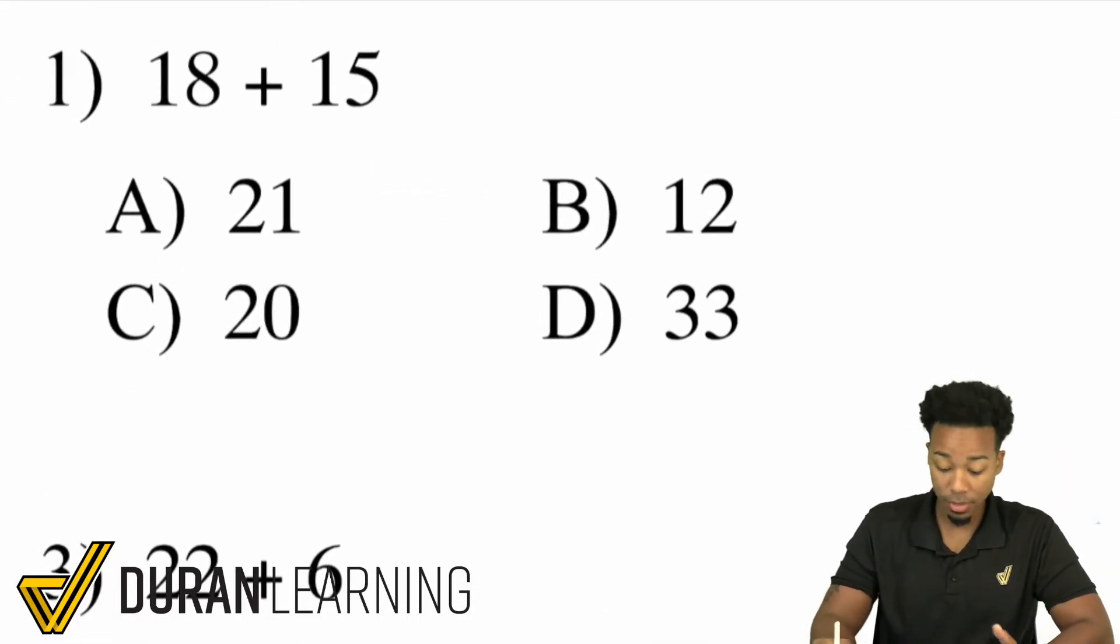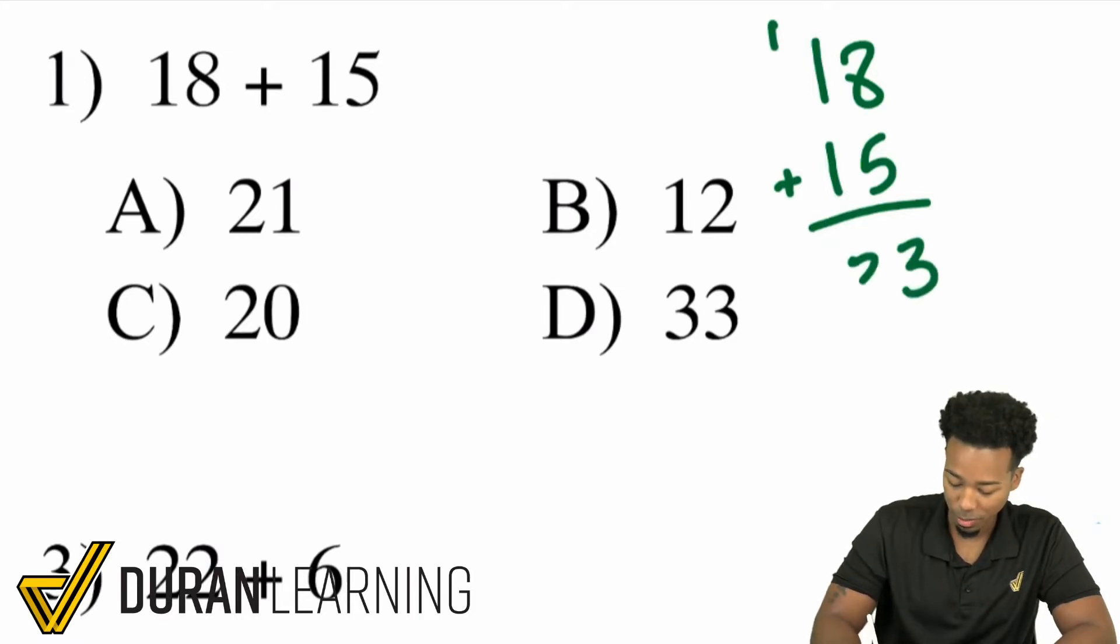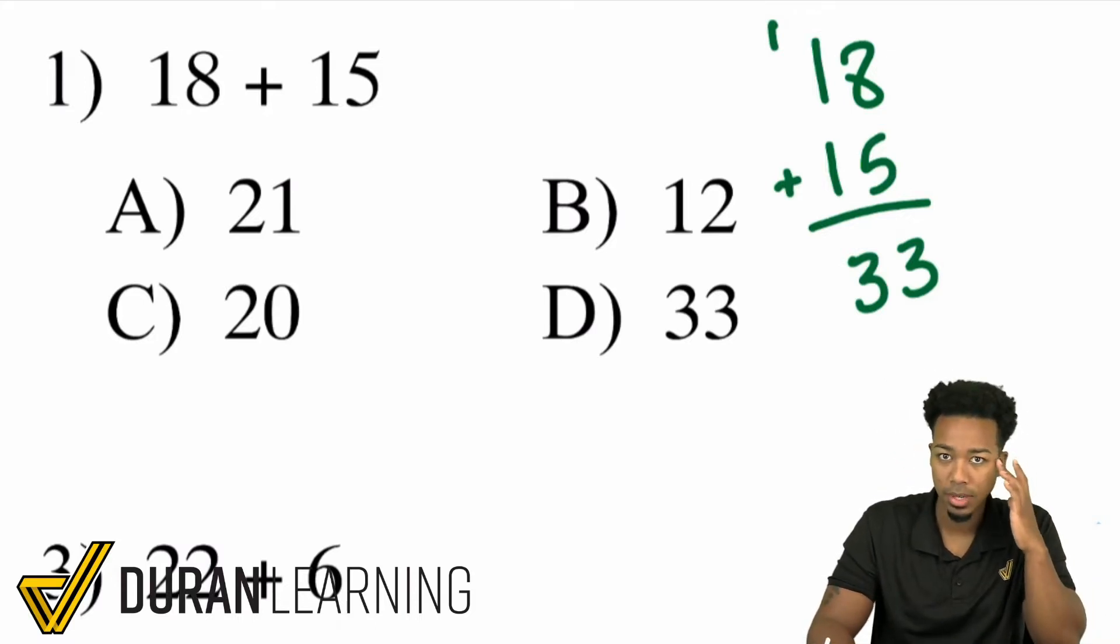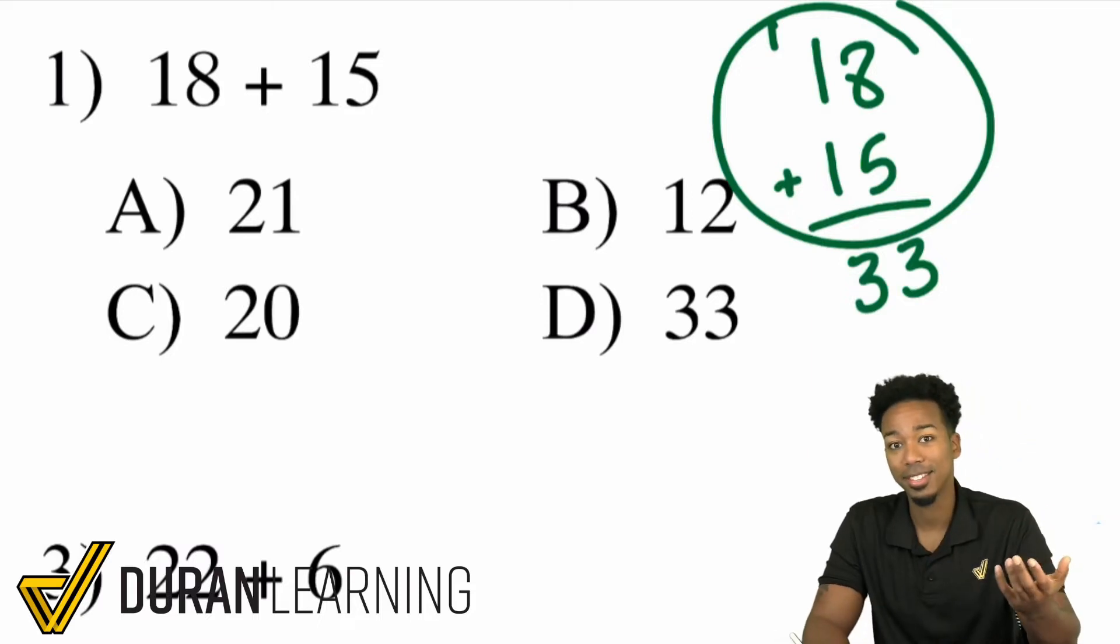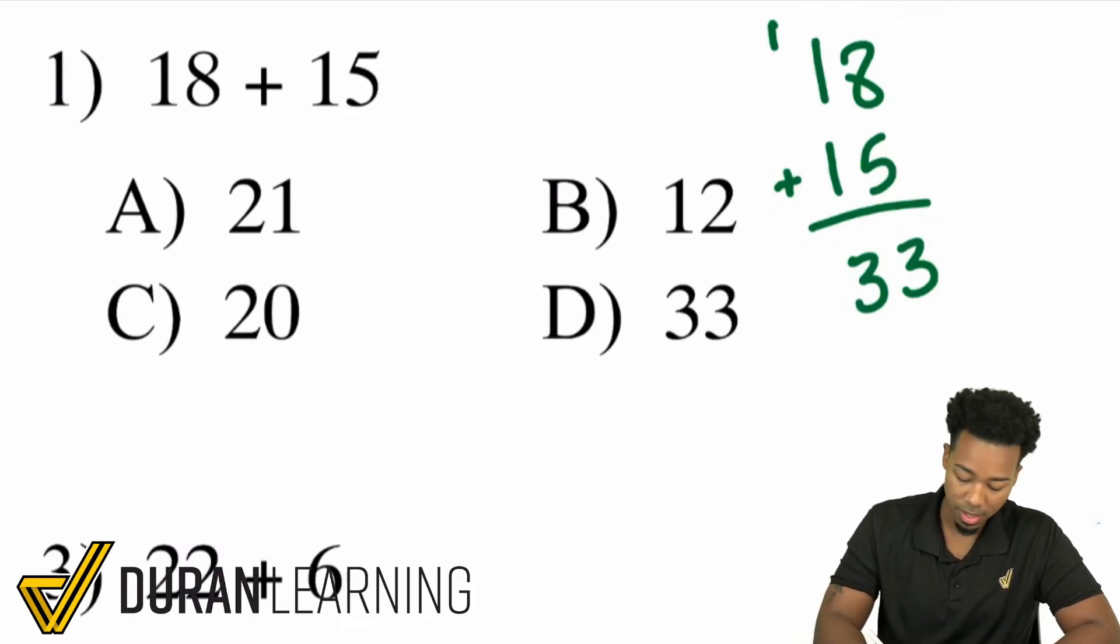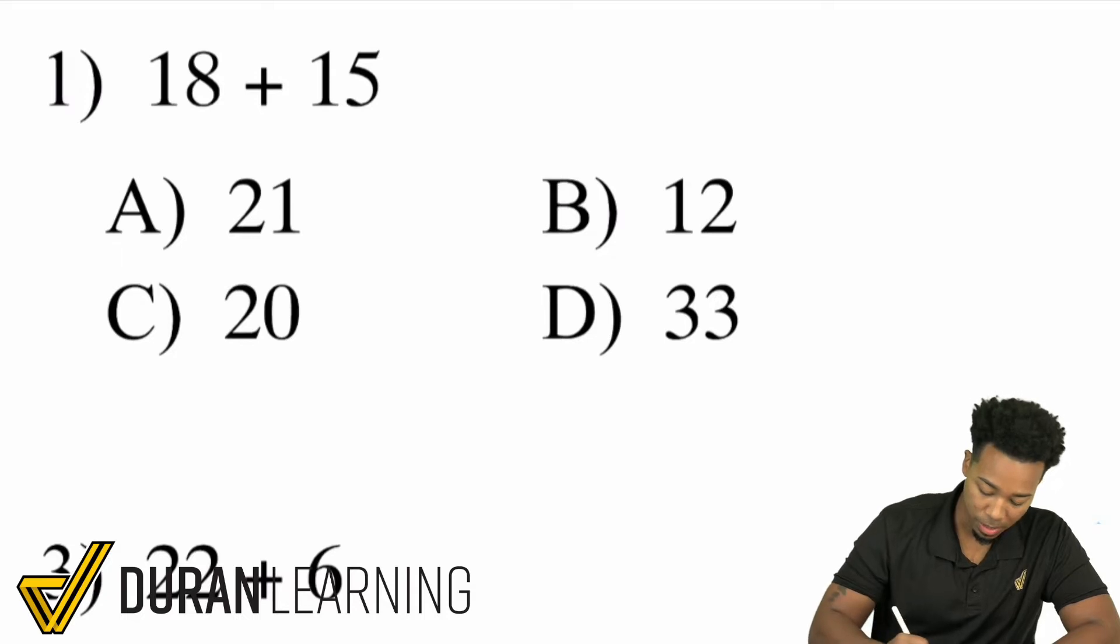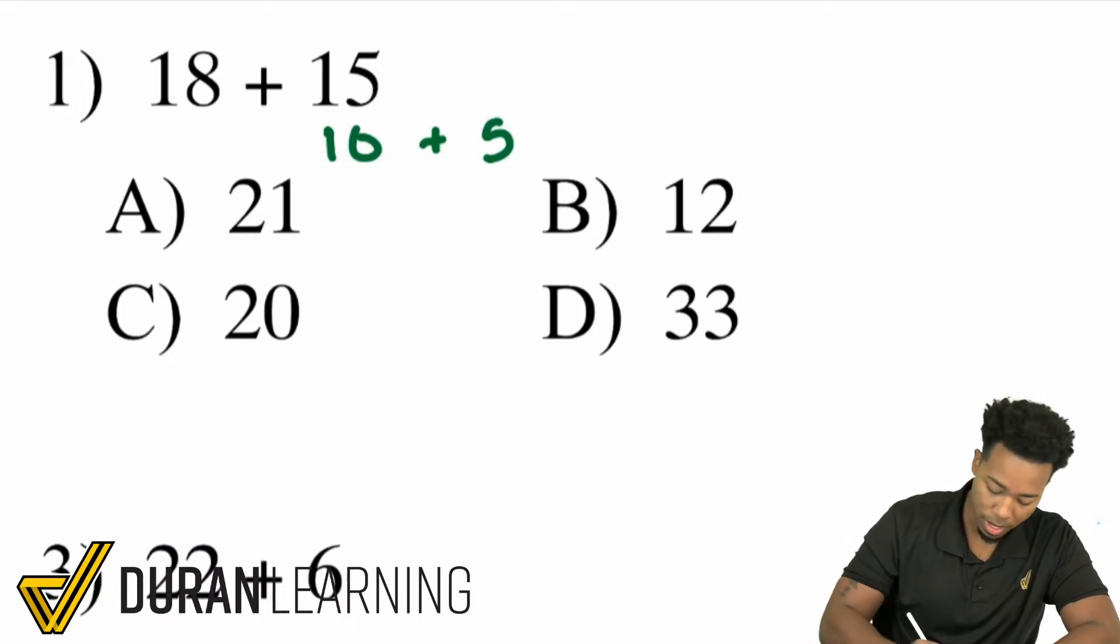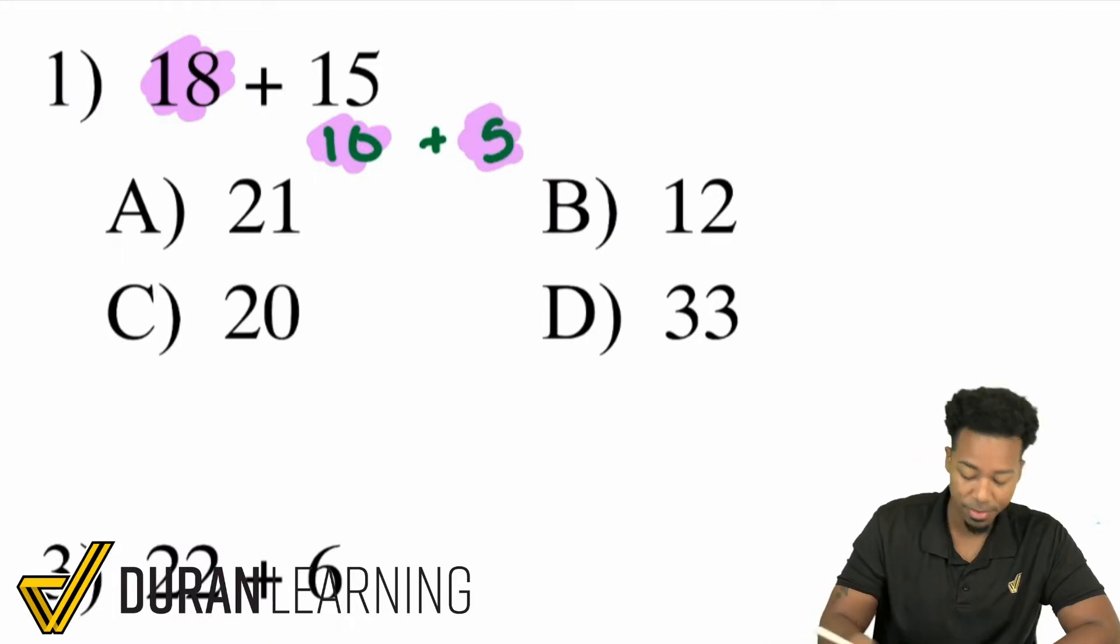So starting off first, let's zoom in. 18 plus 15. A lot of us may have to actually go ahead and write that out as 18 plus 15. Then you add the 8 and the 5 and you get 13, carry that 1, 1 plus 1 plus 1, and then you get 33. But here's another way that you can think about it that allows you to keep it all in your head. We have 18 plus 15. Why not just split the 15 up into 10 and 5? You can do 18 plus 10, which is 28. Then when you're at 28, add the 5 and then you get 33.